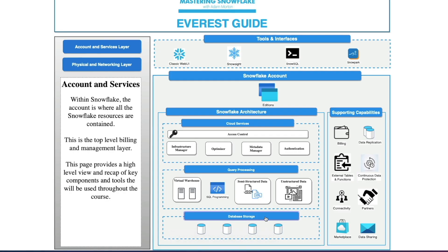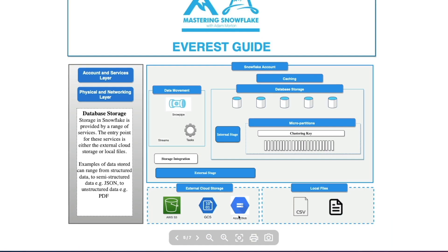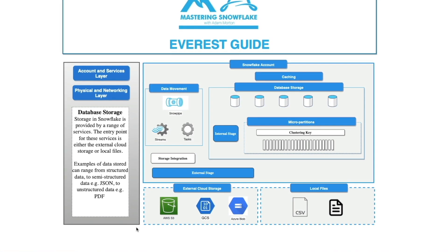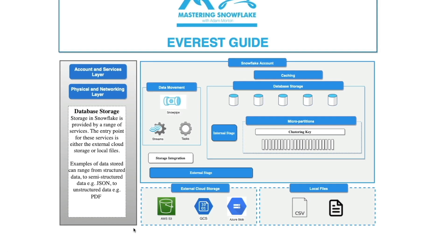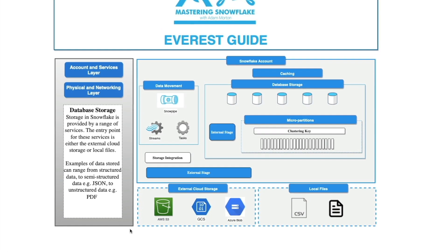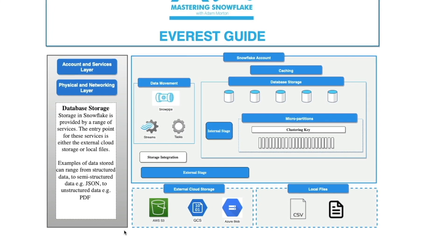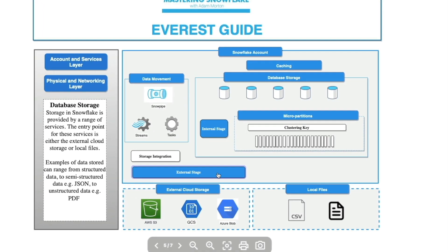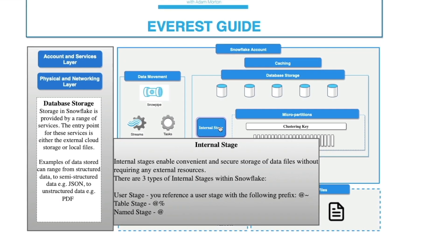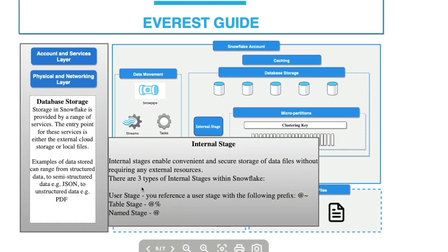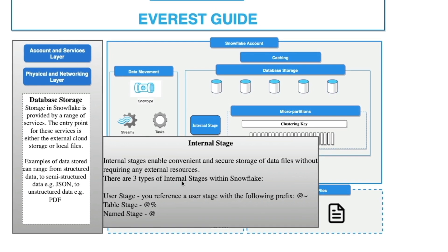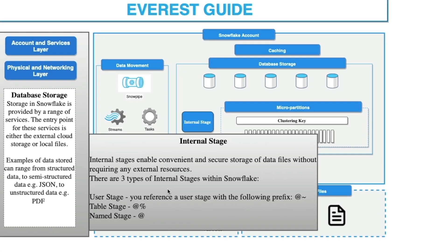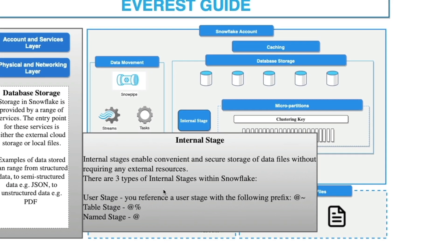Let's talk about getting data into Snowflake, specifically unstructured data. Within the storage layer in Snowflake, before you can get data in you need to stage the data on its way in. There are two different types of stage primarily within Snowflake: an internal stage and an external stage. Internal stages store files internally within Snowflake, and there are three types of internal stages available — I'll put a pop-out banner above the video linking to a previous video where I walk through those.